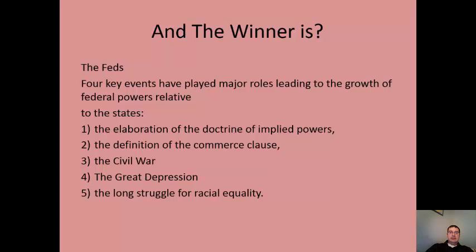Despite battles over authority, ultimately the winner is the federal government. Four key events have led to the growth of federal power over the states. First is the doctrine of implied powers — the necessary and proper clause and the commerce clause are quite broad, implying that Congress has a lot of power. Commerce reaches almost everything, therefore Congress impliedly has authority to make law in many different areas.